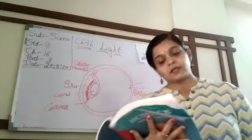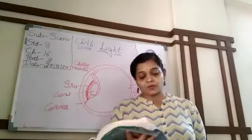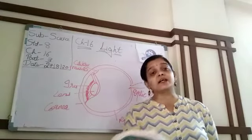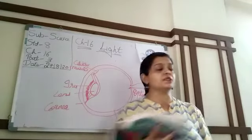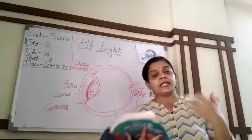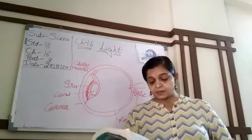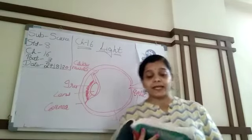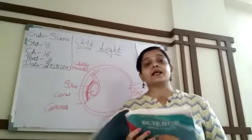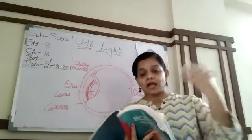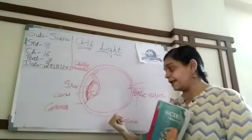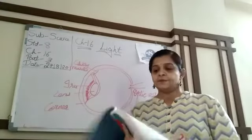The iris controls the amount of light entering the eye. Behind the pupil is a lens which is thicker in the center. People who wear spectacles use artificial lenses, but we all have a natural lens in our eye. The lens focuses light on the back of the eye on a layer called the retina.